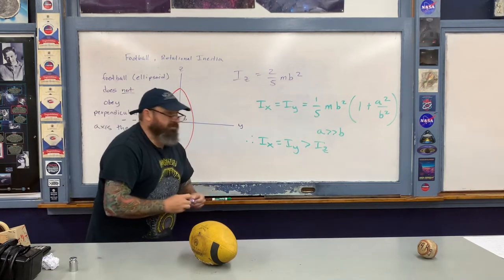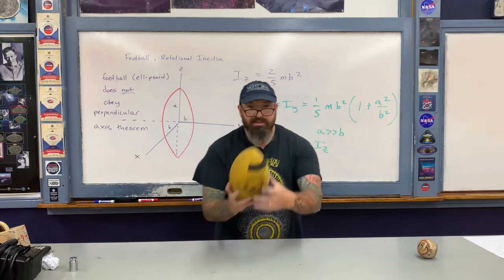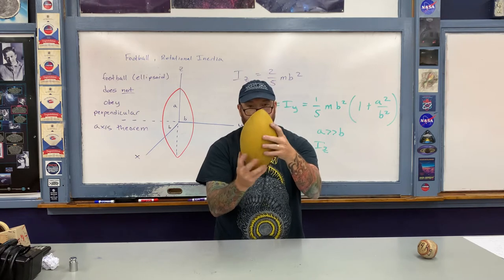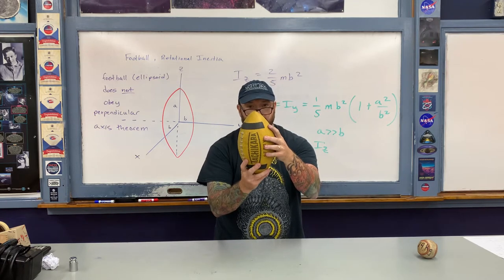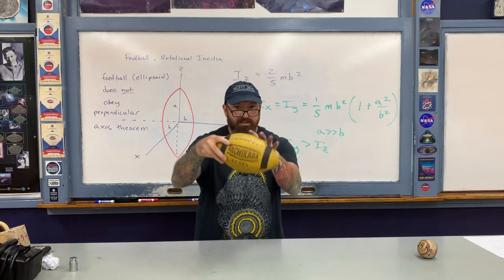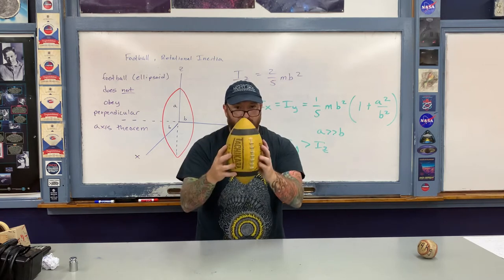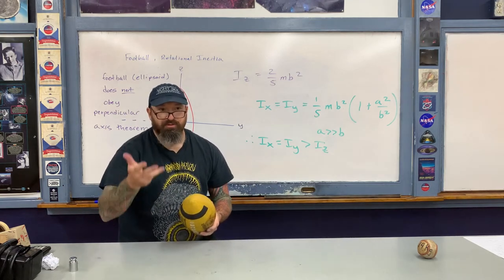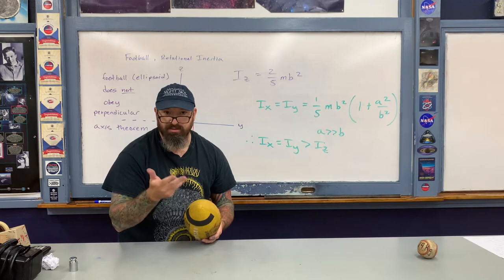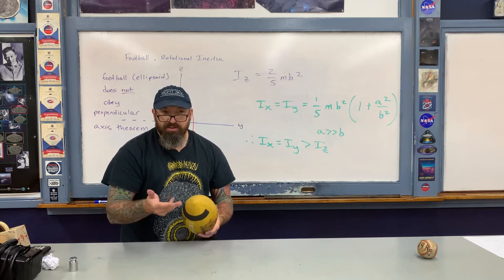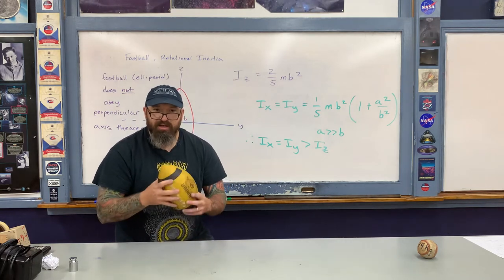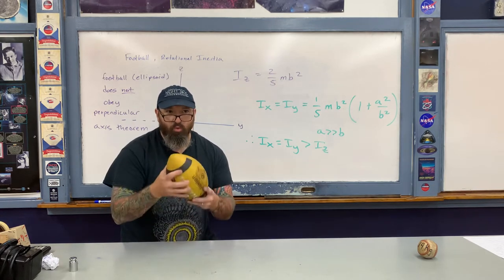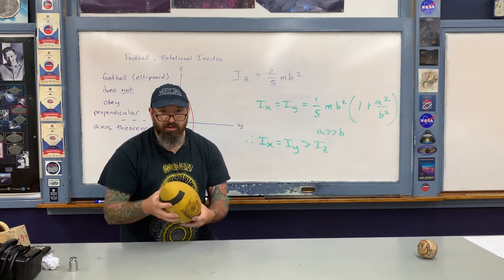Looking at these different rotational inertias: Iz = two-fifths mb² is the smaller rotational inertia compared to Ix or Iy. Recall that the greater the rotational inertia, the greater the tendency to remain at a constant angular velocity. This leads to a kind of paradox — when you throw or punt a football, why should you try to spiral it?